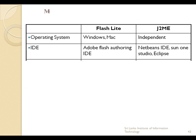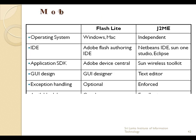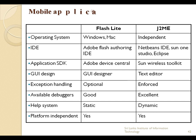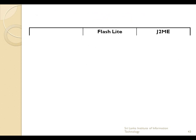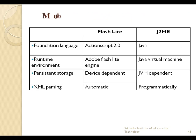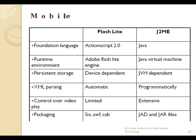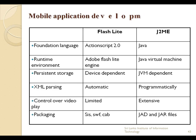This table shows a comparison of two mobile application development technologies: J2ME and Flash Lite. Looking at this table you can easily differentiate both technologies and their relationships. It also shows the main differences between Flash Lite and J2ME.